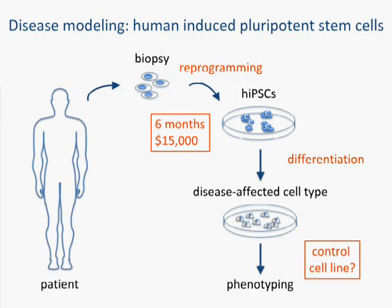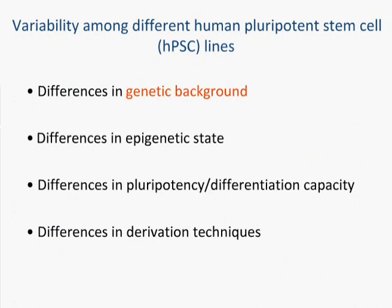These have to do with the variability among different pluripotent stem cells. These differences probably arise due to differences in genetic background, differences in epigenetic state, differences in the pluripotency or differentiation capacity of those cells — certain cell lines are more apt to turn into, say, liver cells than other cell lines, and that can actually skew your results considerably. There are also differences in the derivation techniques by which people make IPS cell lines, which may impinge upon their ability to do all of these things.